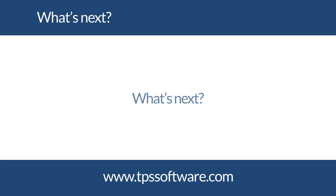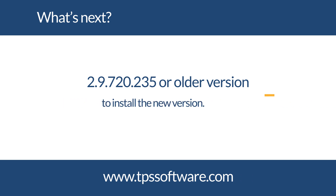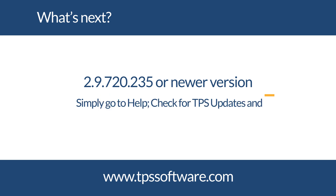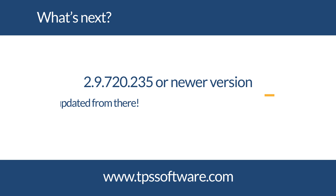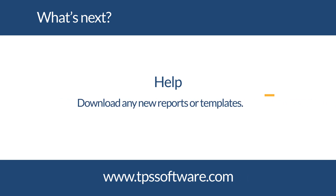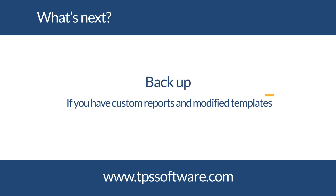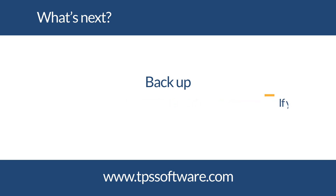So what's next? If you're on an older version, you'll just need to download the complete setup files from our website to install the new version. If you are newer, good news! Simply go to Help, check for TPS updates, and if you're using a prior version, we'll get you updated from there. Under Help, we've added an option to update reports and templates. Use this function to download any new reports or templates that were included with the new version. If you have custom reports and modified templates, ensure they are saved and backed up prior to downloading the new version.